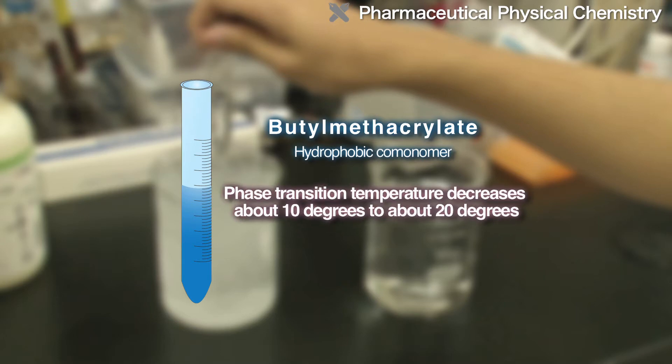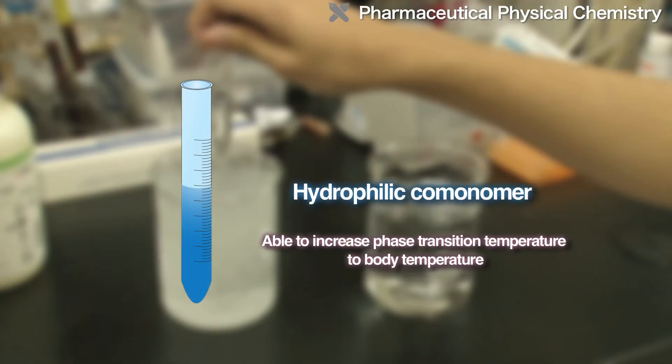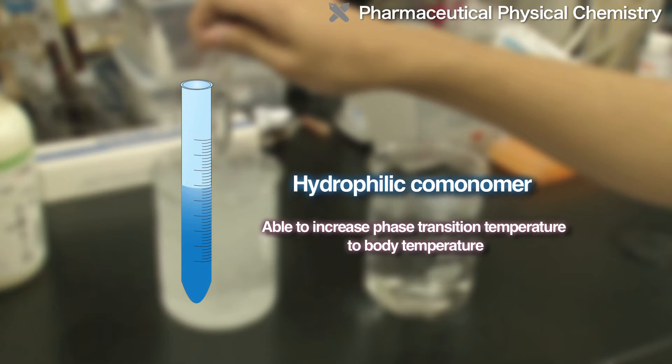On the other hand, if you add hydrophilic comonomer, the phase transition temperature can be increased so that it will be closer to body temperature.